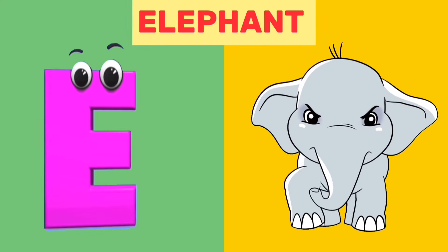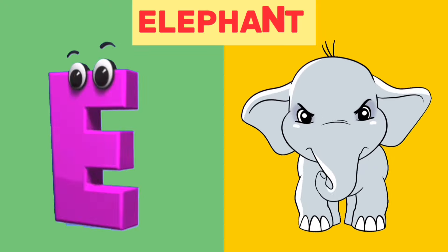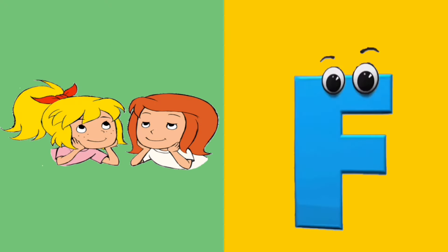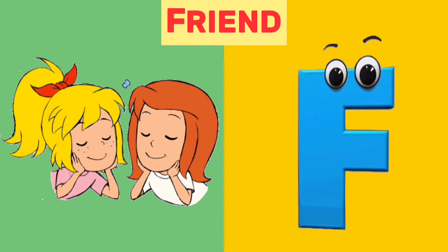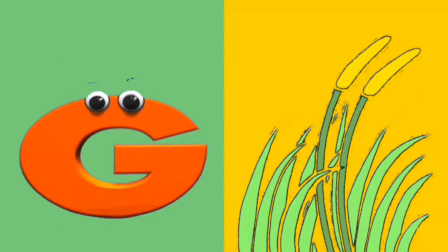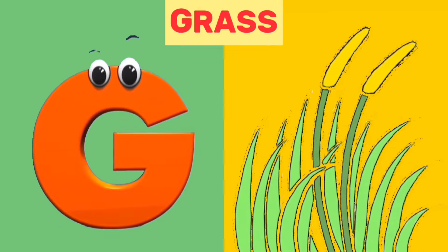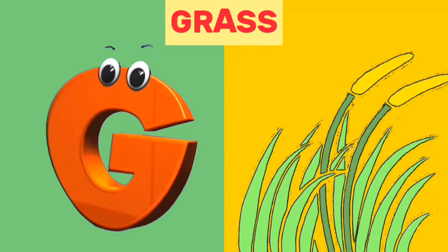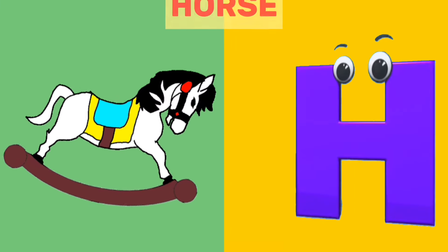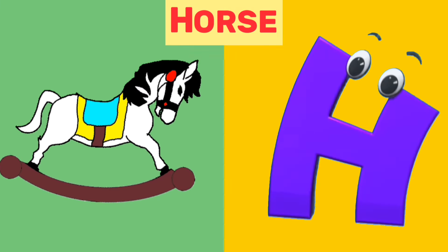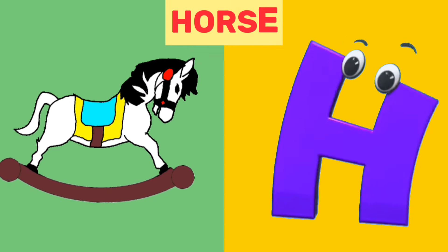E is for elephant, e, elephant. F is for friend, f, friend. G is for grass, g, grass. H is for horse, h, horse.